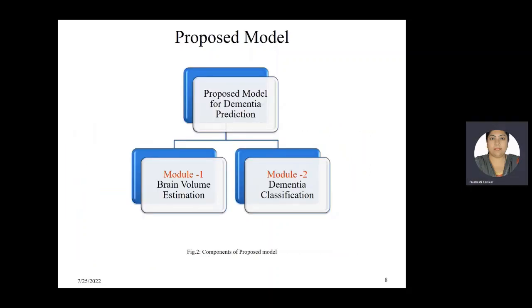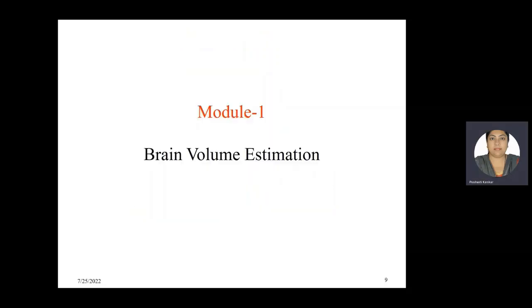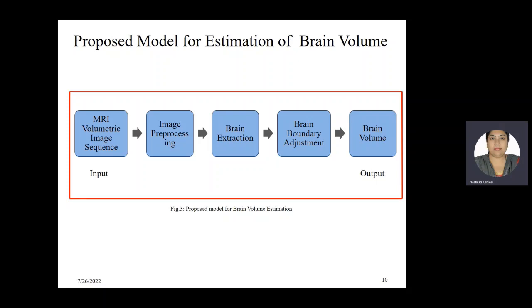The proposed model can be divided into two modules. The first helps in estimation of brain volume, whereas the second module helps in classification of dementia. In the first module, three-dimensional volumetric images are taken as input. After that, noise is removed and features are enhanced in the image preprocessing step. In brain extraction, brain voxels are extracted and non-brain voxels are rejected. In the brain boundary adjustment module, the actual boundary of the brain gets modified by taking some useful voxels and removing non-useful voxels, after which the brain volume is calculated.